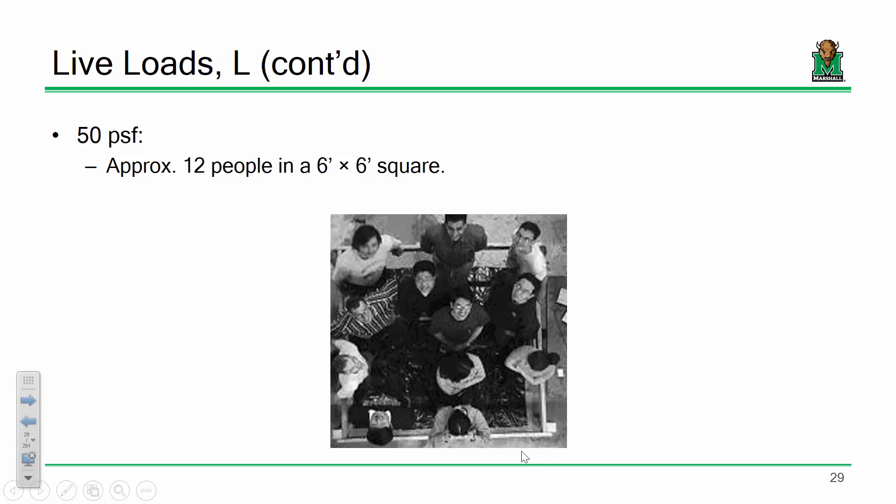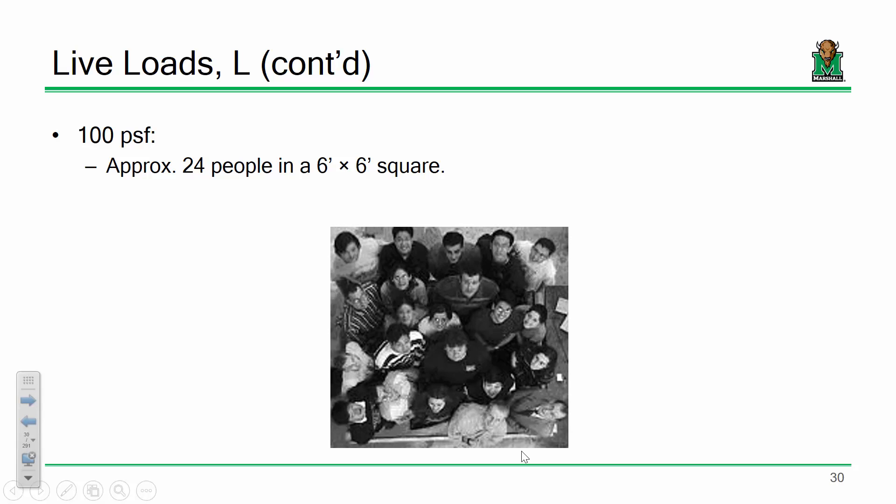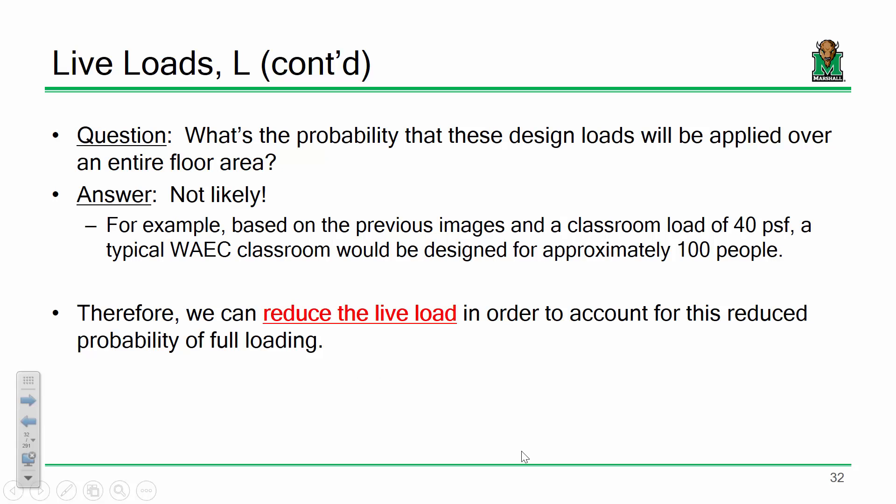Even at 50 psf, extending that to this entire room would mean hundreds of people — is this room really going to see 150-some people? No. These are upper-bound estimates. But the real question is: what's the probability this floor system is actually going to see that load applied everywhere at the same time? At 40 psf, this room works out to over 100 people — the fire marshal wouldn't allow that anyway.